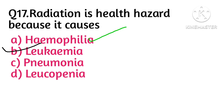Hemophilia is a condition when blood cannot clot properly and excessive bleeding — both external and internal — occurs after any injury or damage. Pneumonia is an infection that inflames the air sacs in one or both lungs. Leukopenia is a condition in which the number of white cells in the blood is reduced.